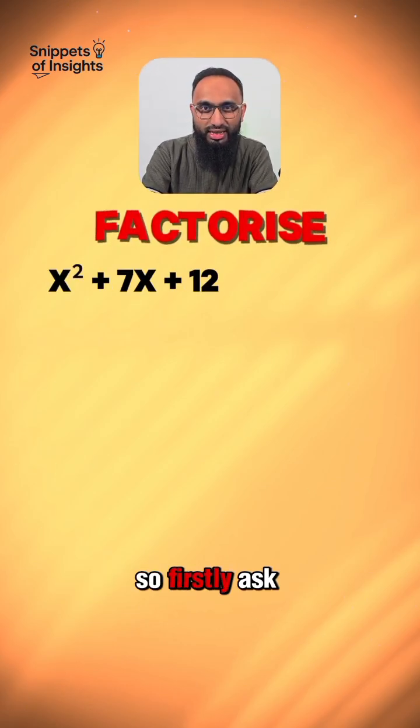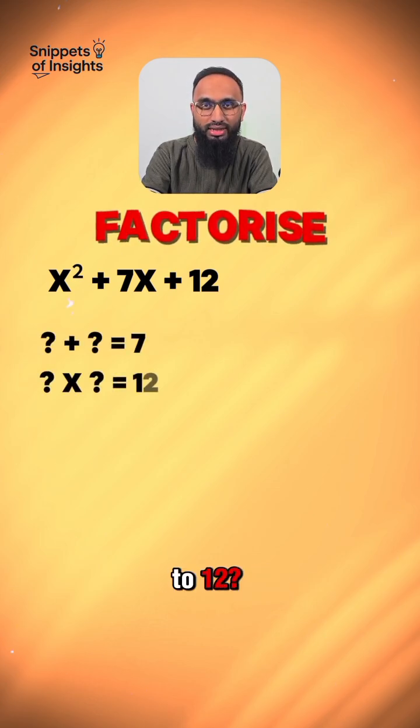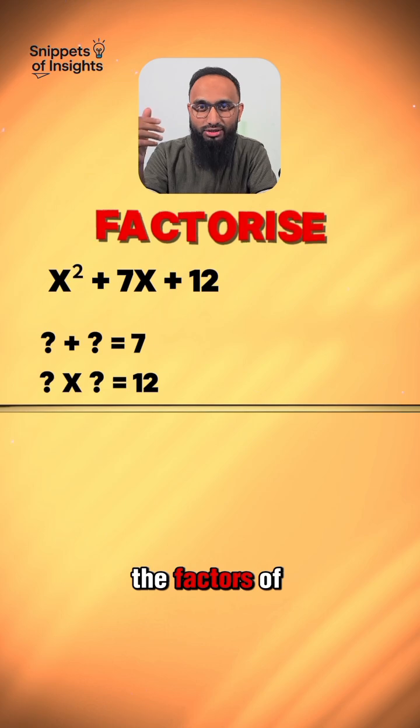So firstly, ask what two numbers add up to 7 and multiply to 12. So let's list the factors of 12.